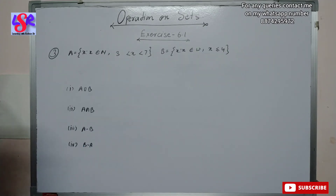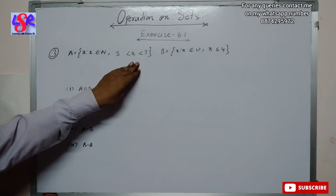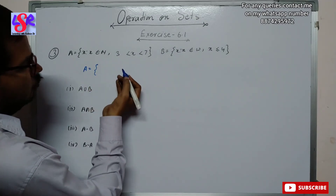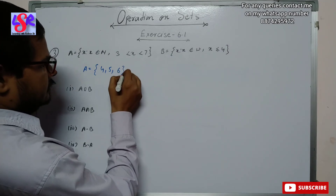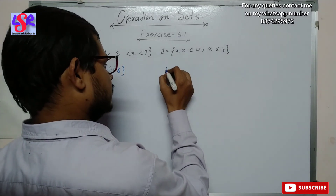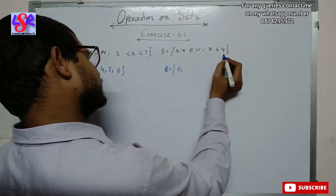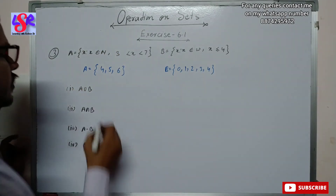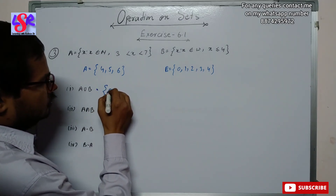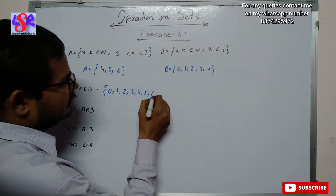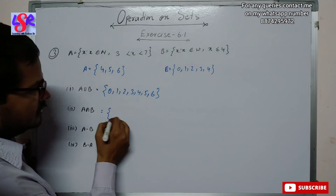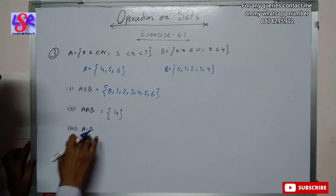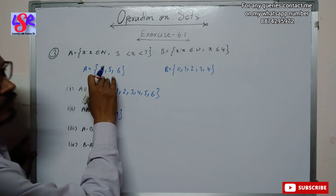Let's move to question three. Set A = {x : x ∈ natural numbers, 3 < x < 7} = {4, 5, 6}. Set B = {x : x ∈ whole numbers, x ≤ 4} = {0, 1, 2, 3, 4}. A union B is the combination of both: {0, 1, 2, 3, 4, 5, 6}. For A intersection B, the common element is only 4, so A ∩ B = {4}.